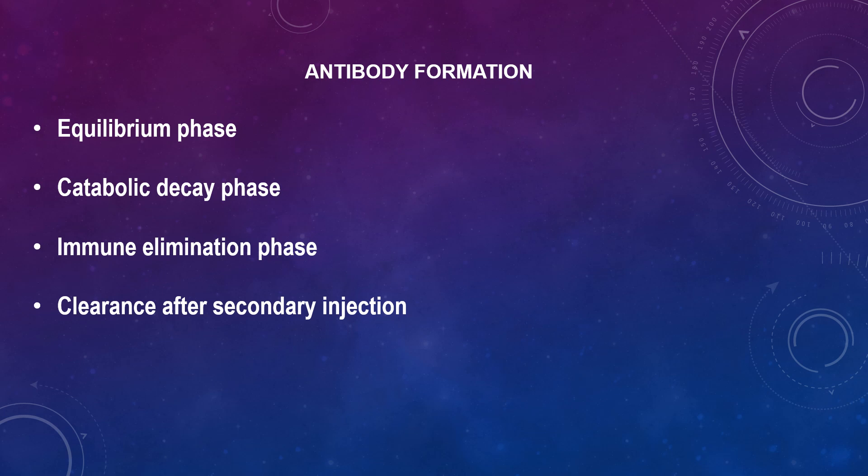There is a catabolic decay phase in which host cells and enzymes metabolize the antigen. Most of the antigen is taken up by macrophages and other phagocytic cells. The duration depends upon the immunogen and the host. There is then the immune elimination phase, in which newly synthesized antibody combines with the antigen producing antibody-antigen complexes, which are phagocytosed and degraded. Antibody appears in the serum only after the immune elimination phase is complete.